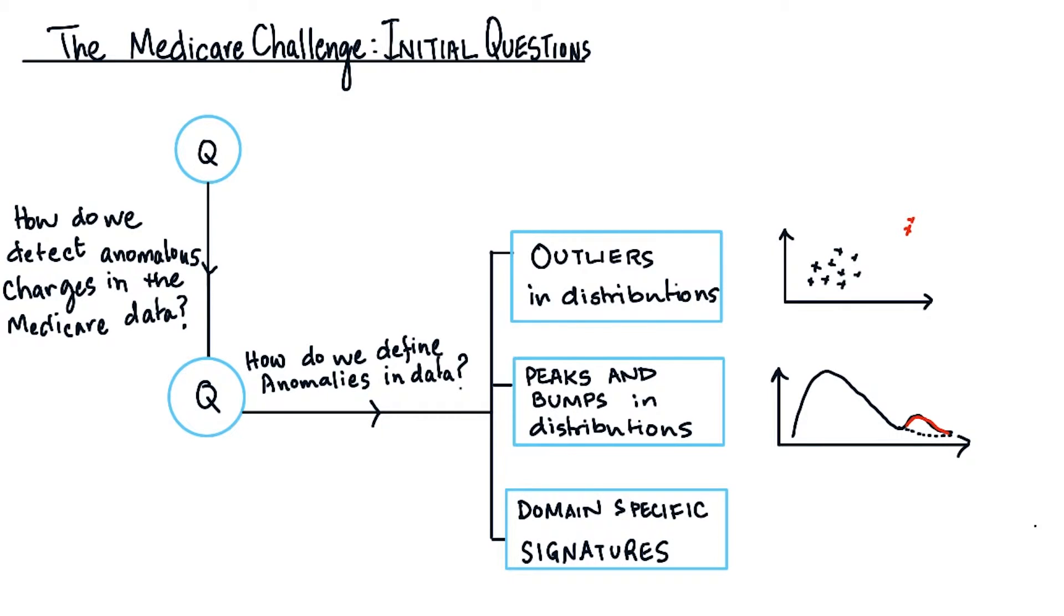Another way we define anomalies in the data is by looking at domain-specific signatures. Imagine, for example, a sequence of events in logs indicating an intrusion in a data center.